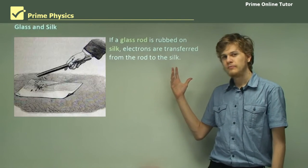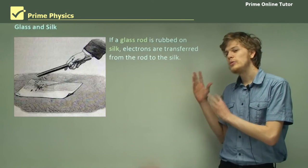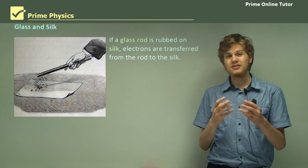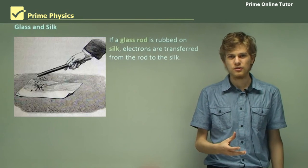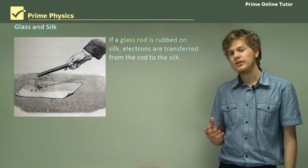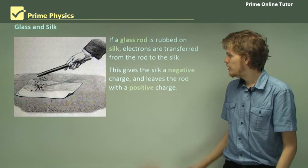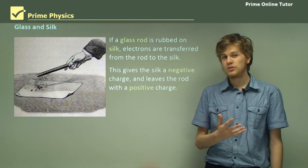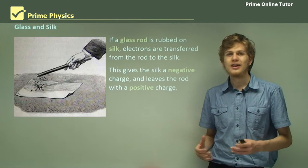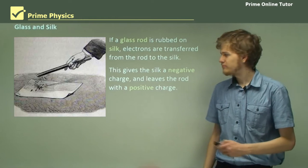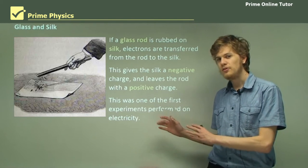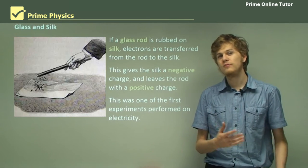If we take a glass rod and rub it on a piece of silk, then electrons will be transferred from the rod to the silk. So now the glass rod will have fewer electrons and the silk will have more electrons, meaning there'll be an unbalanced number of protons and electrons in each object. The silk gains a negative charge because it has more electrons than protons, and the glass rod will have a positive charge because it has more protons than electrons. This was one of the first experiments performed on electricity, and it was experiments like these which led to the development and invention of electric devices.